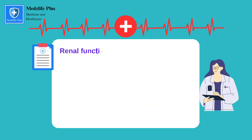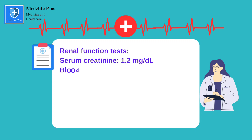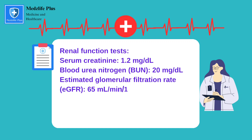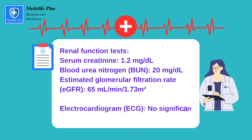Renal function tests reveal serum creatinine 1.2 mg/dL, blood urea nitrogen 20 mg/dL, and estimated glomerular filtration rate of 65 ml per minute per 1.73 m². Electrocardiogram (ECG) shows no significant abnormalities.